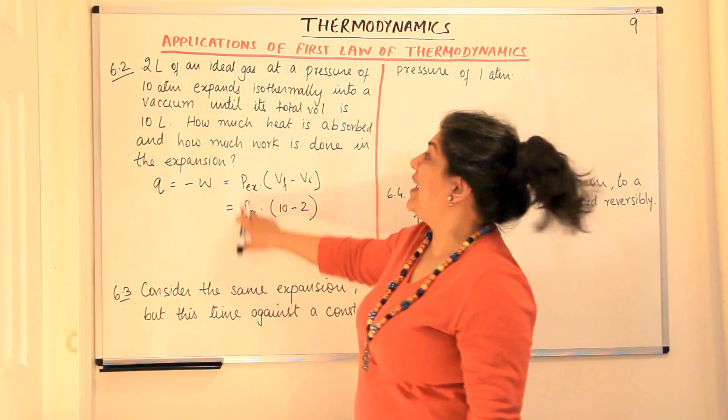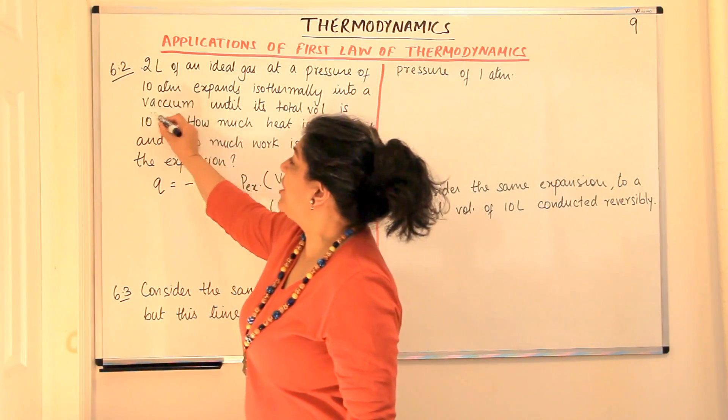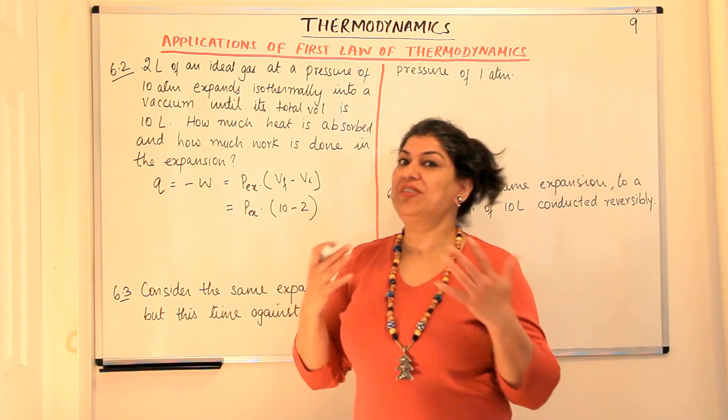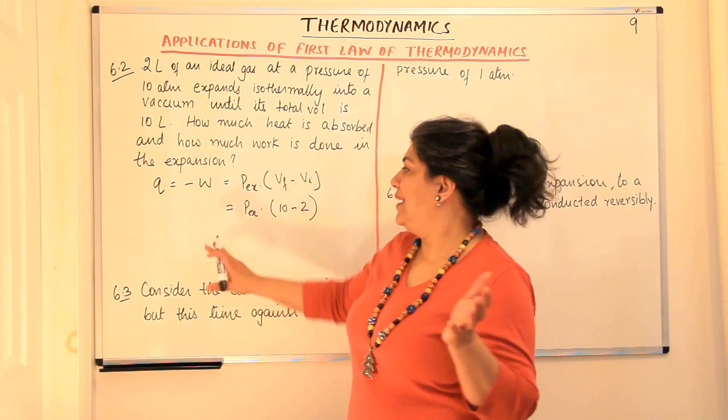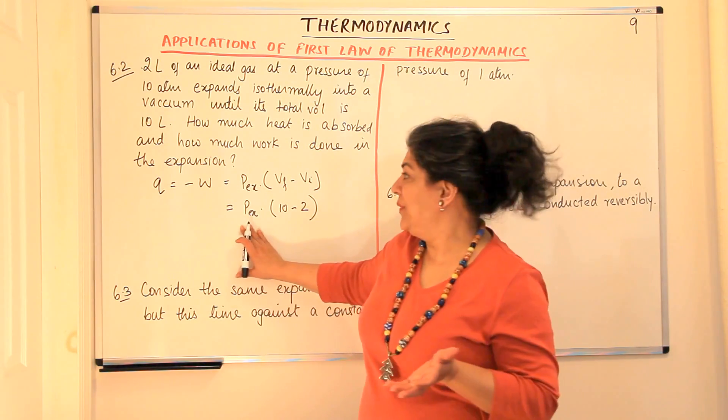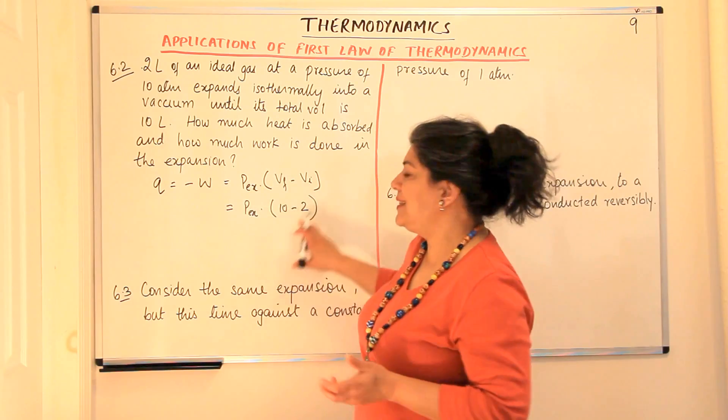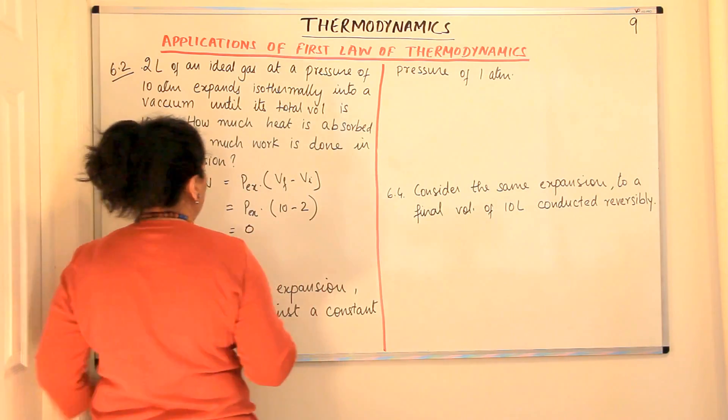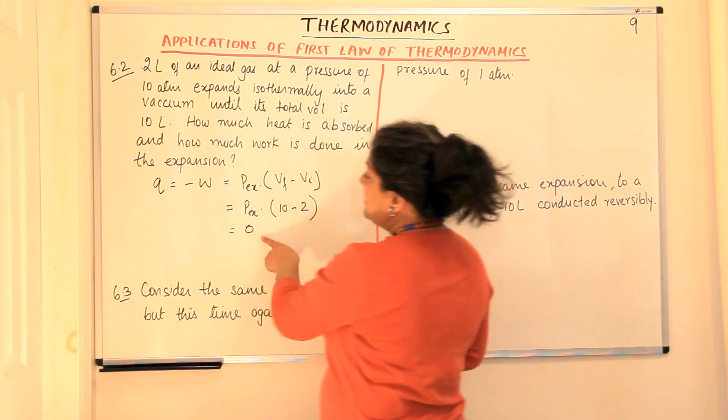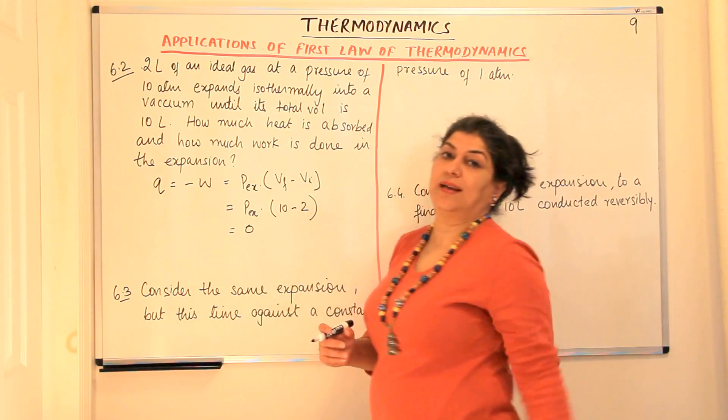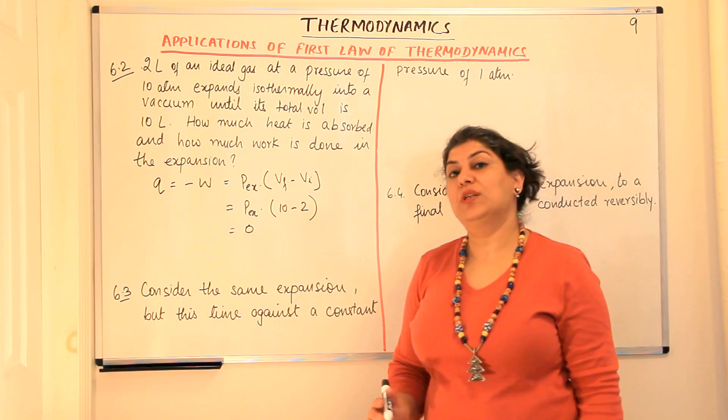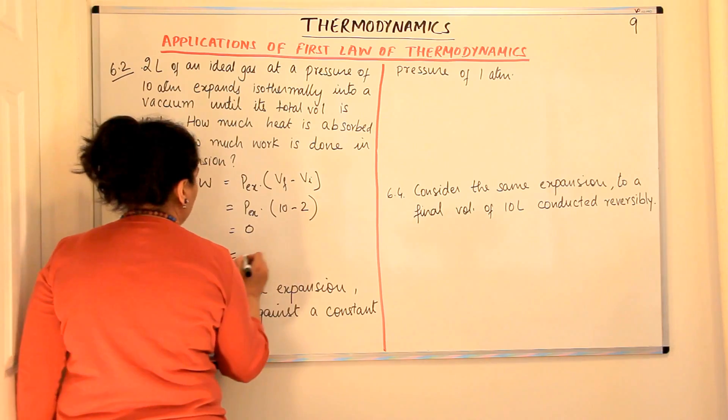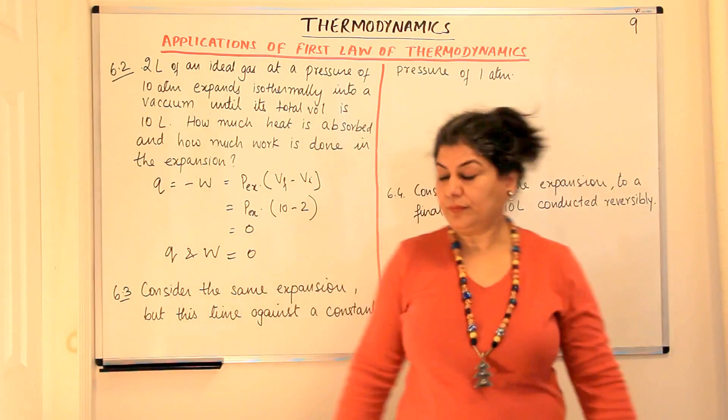But P external in the case here is it is a vacuum which means there is no gas present outside the jar and if there is no gas, if it is vacuum, then P external is 0. And if P external is 0 then obviously this entire term is equal to 0. Since it is 0, both heat and the work done for this process would be equal to 0. So here we'd say that Q and W are equal to 0.